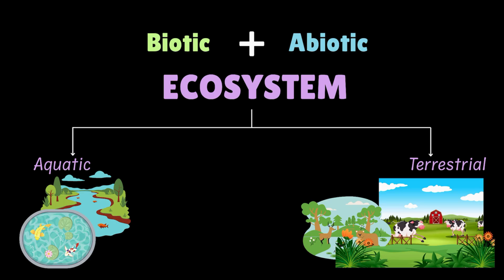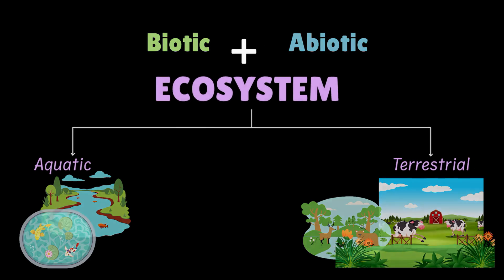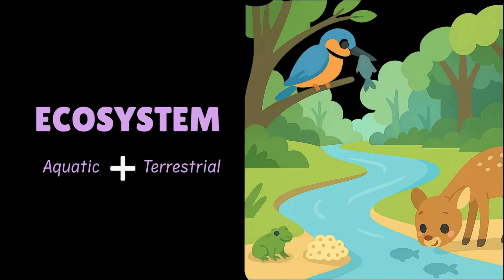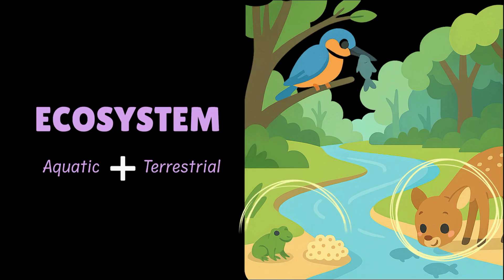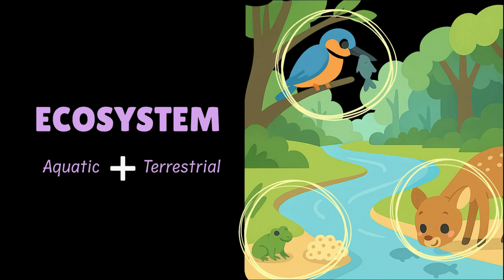Ecosystems can overlap. A river, which is aquatic, winding through a forest, which is terrestrial, means the two are constantly influencing each other. Animals drink at the river, frogs lay eggs near the bank, and birds hunt fish from overhanging branches. Can you think of more ways in which organisms in these two ecosystems interact? Let me know in the comments below.